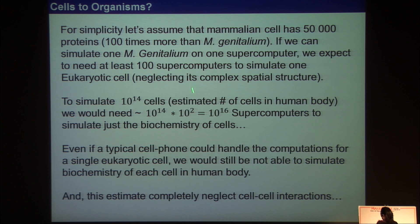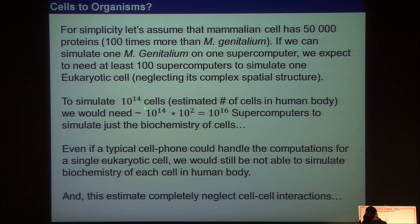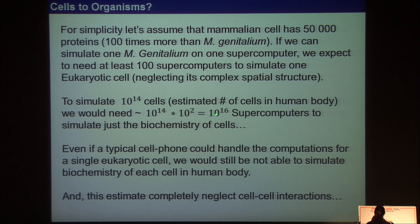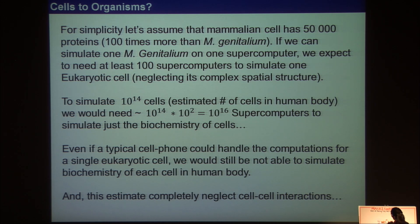So anyway, back to the estimation. If we were to simulate every single cell in a human body — approximately 10^14 cells, each at least 100 times more complex than Mycoplasma — we would end up needing something like 10^16 supercomputers. That's a big number. There are not that many cell phones in the entire world. So even if your iPhone could simulate a single cell, we still couldn't do this.